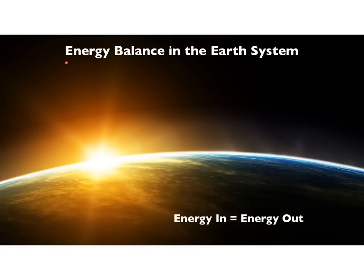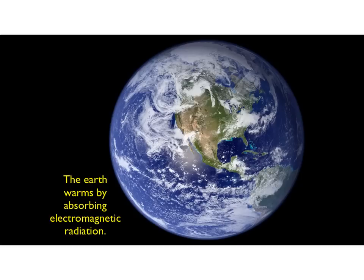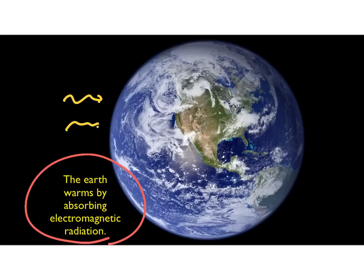The next topic is energy balance in the Earth system — an application of things we've talked about earlier. To a first approximation, the temperature of the Earth doesn't change much with time — the Earth is about the same temperature as it was two billion years ago. So to a good approximation, energy in equals energy out. The Earth warms by absorbing electromagnetic radiation — light from the Sun streams in, hits the surface, gets absorbed.